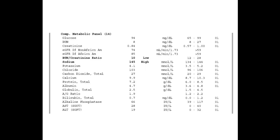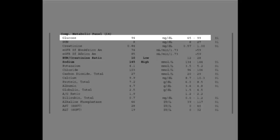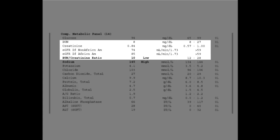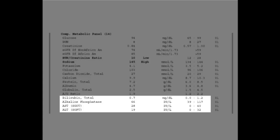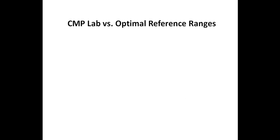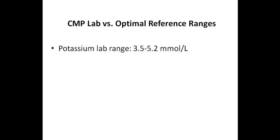Blood test number two is a comprehensive metabolic panel. Like a CBC with differential, a comprehensive metabolic panel can provide a lot of valuable information, which is why it's routinely done by healthcare practitioners. Here you can see a sample comprehensive metabolic panel. You can see that it looks at glucose, which you ideally want to do fasting. It also looks at some kidney markers, a few electrolytes, proteins, and markers related to the liver. While you don't want any of the markers to be outside of the lab reference range, there are also optimal reference ranges to pay attention to. Here are some of the more important optimal ranges, and I'll compare them with the lab reference ranges.